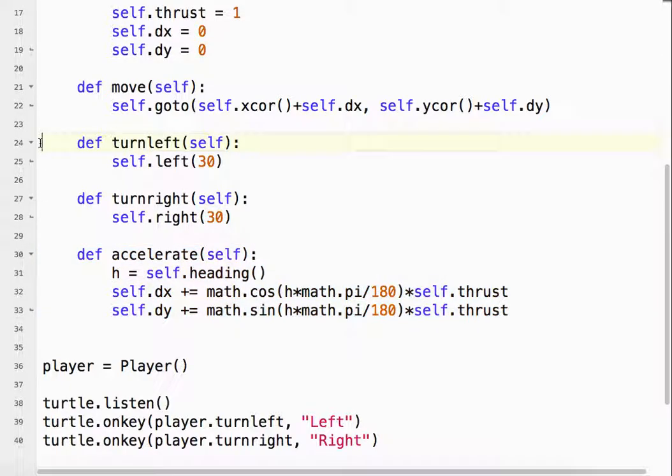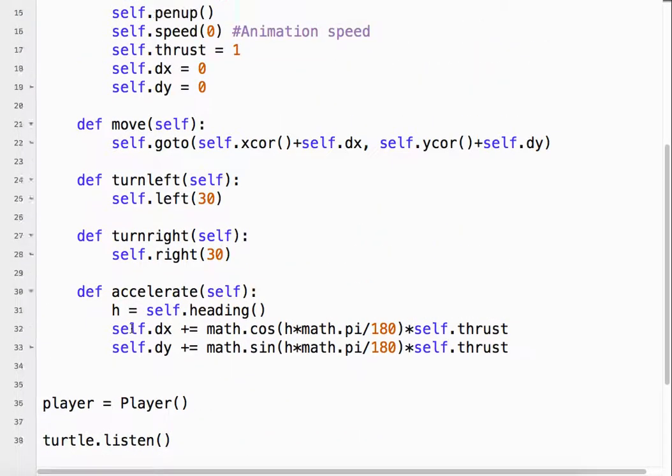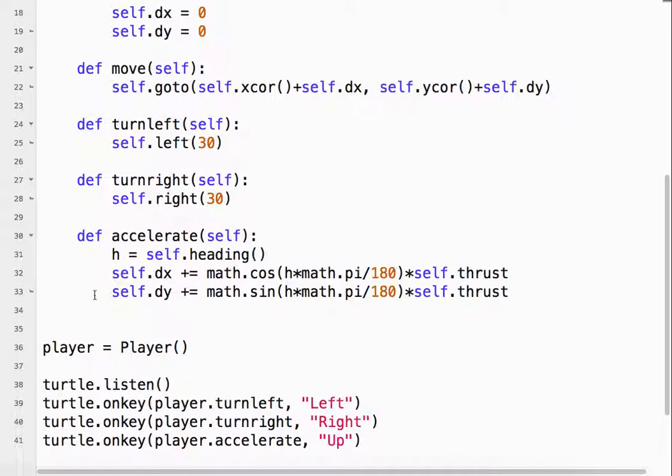So basically, this function changes our dx and our dy. Okay? These two functions change our heading. And this function actually moves the ship. And then down here in our main game loop, player.move. So if you looked at the previous tutorials, this has never changed. Okay? Because we're using classes, the only code that changes is our class code. And then we can have multiple instances if we wanted. Now, this is the player, so we only have one instance. But we could have multiple instances if we wanted to.